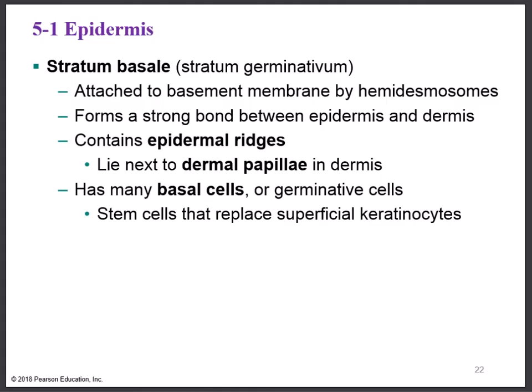Let's look at the deepest layer first — the stratum basale, also called the stratum germinativum. Basale means basal, like basement, so this is the bottom layer. These cells are attached to a protein floor called the basement membrane. What attaches the cell to the basement membrane are hemidesmosomes — their job is to attach the cells to that protein floor. Without hemidesmosomes, our skin would pull away from the body. So the stratum basale forms a strong bond between the epidermis above and the dermis below.